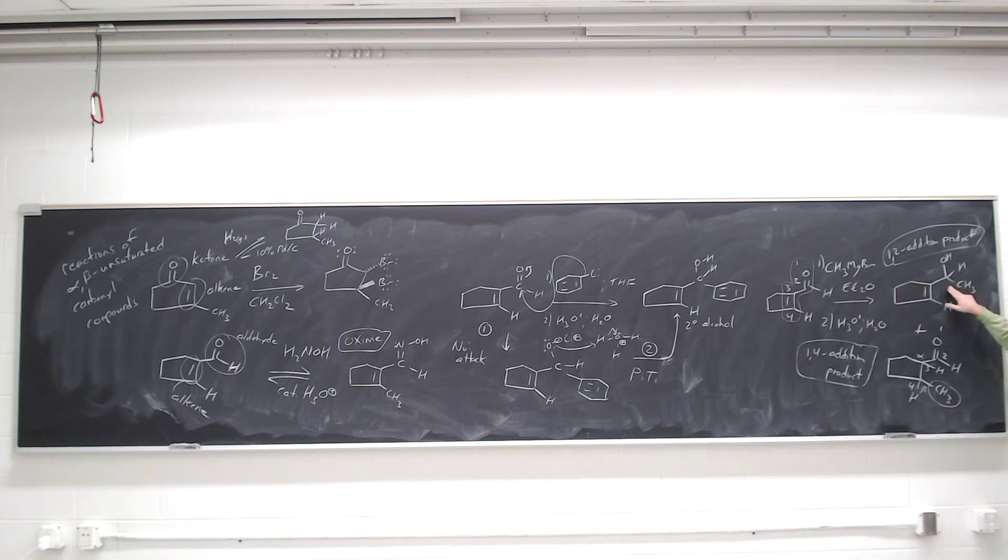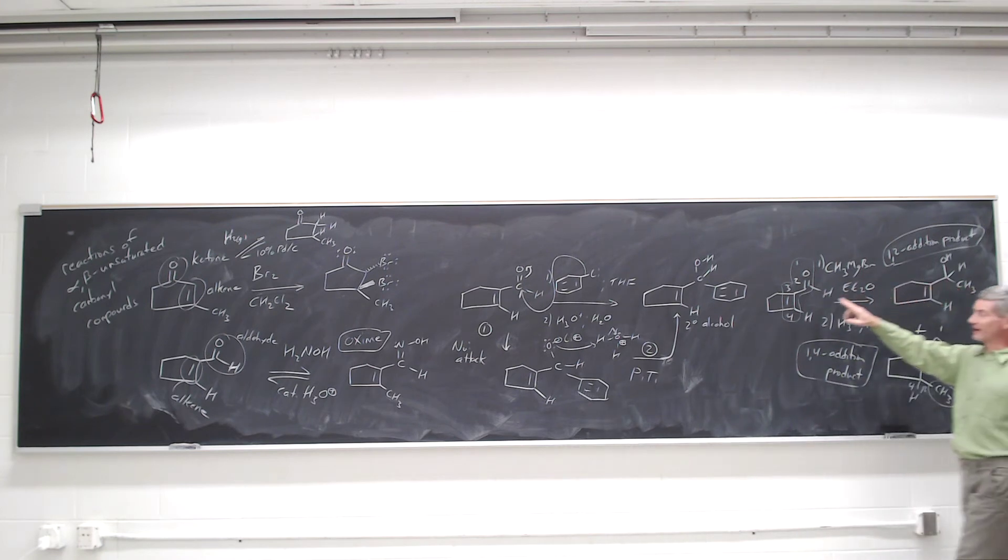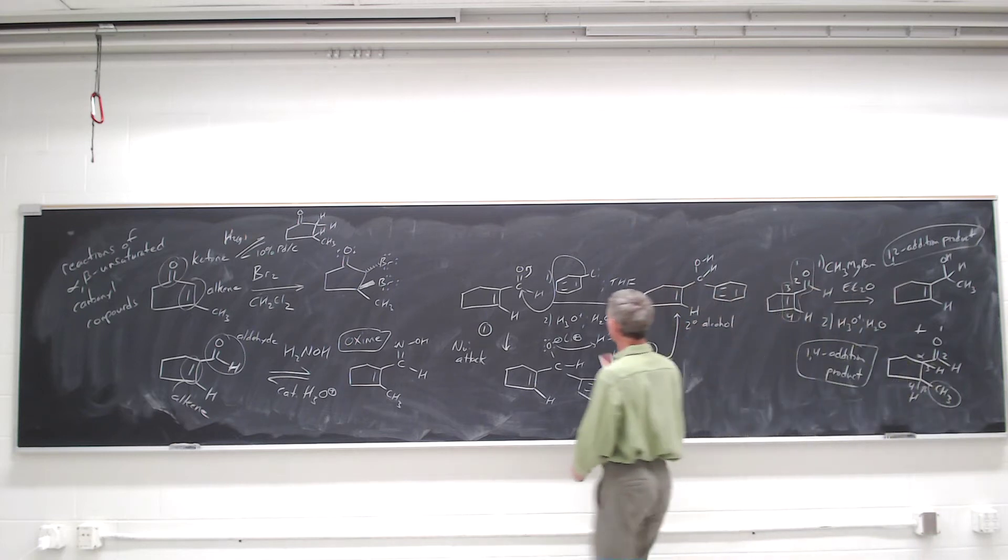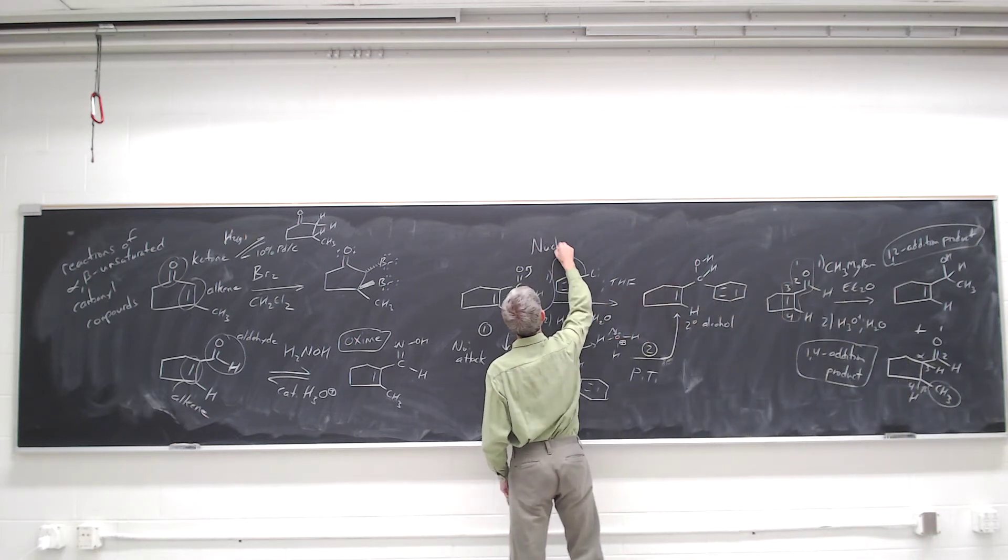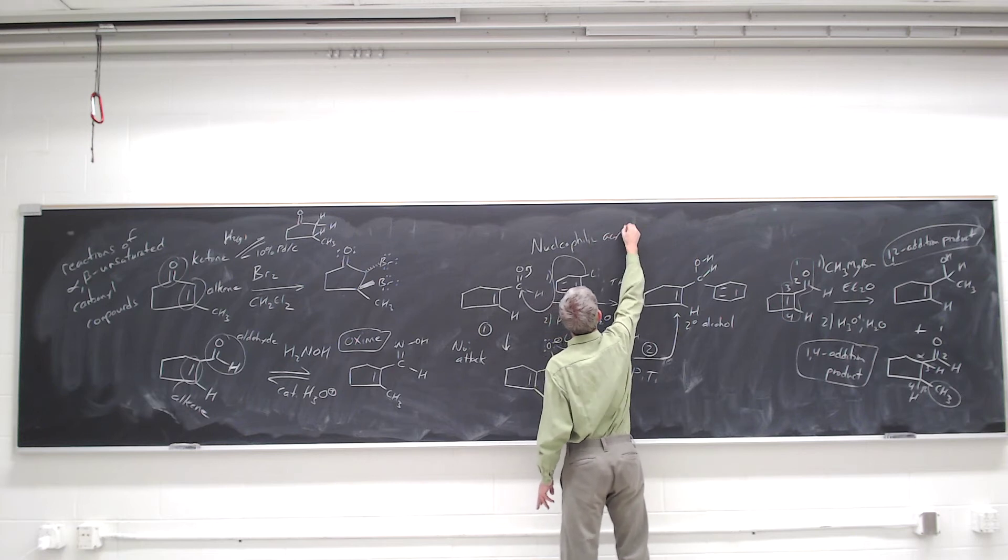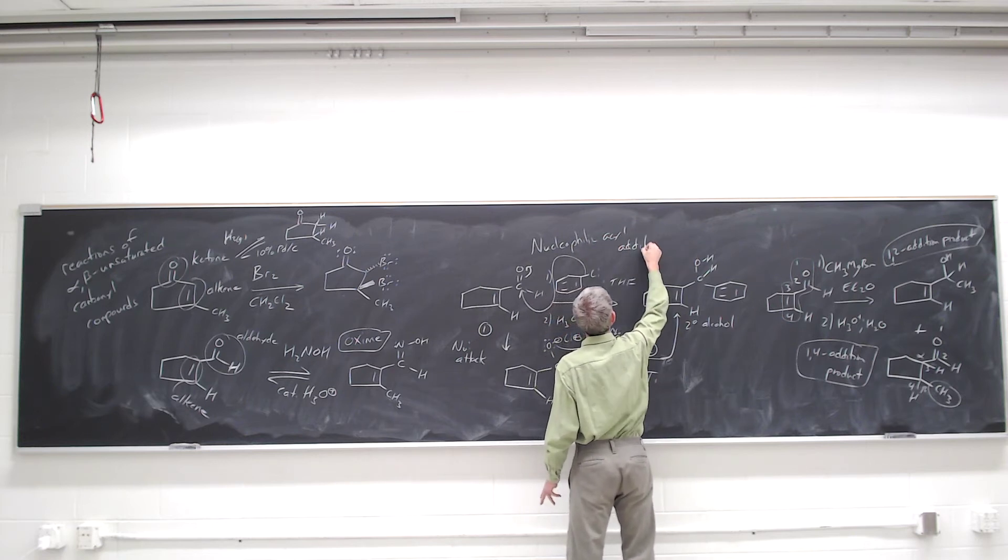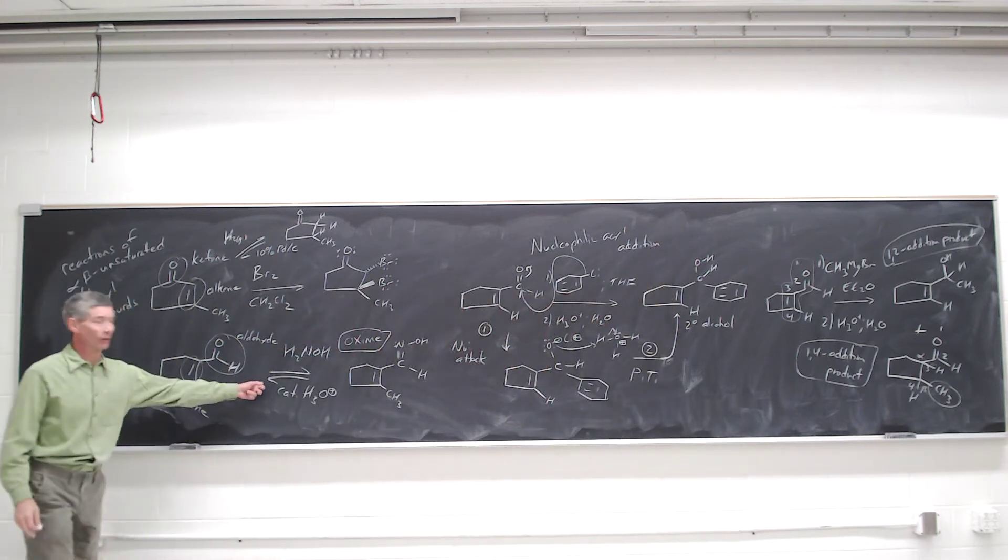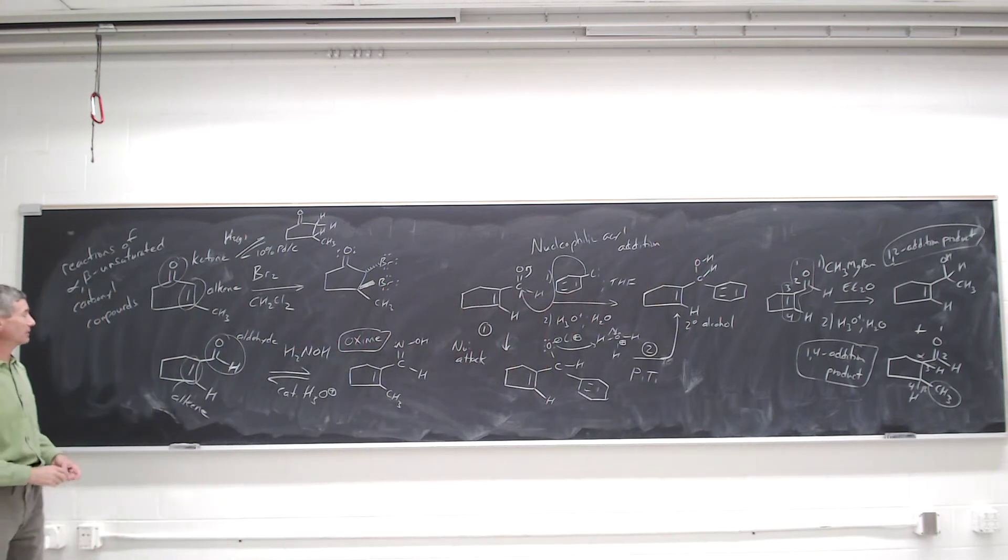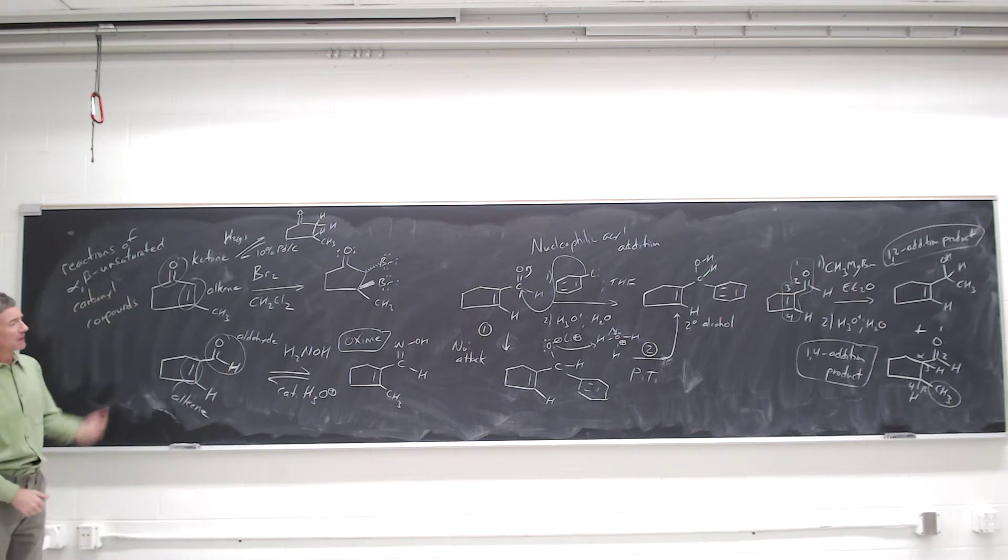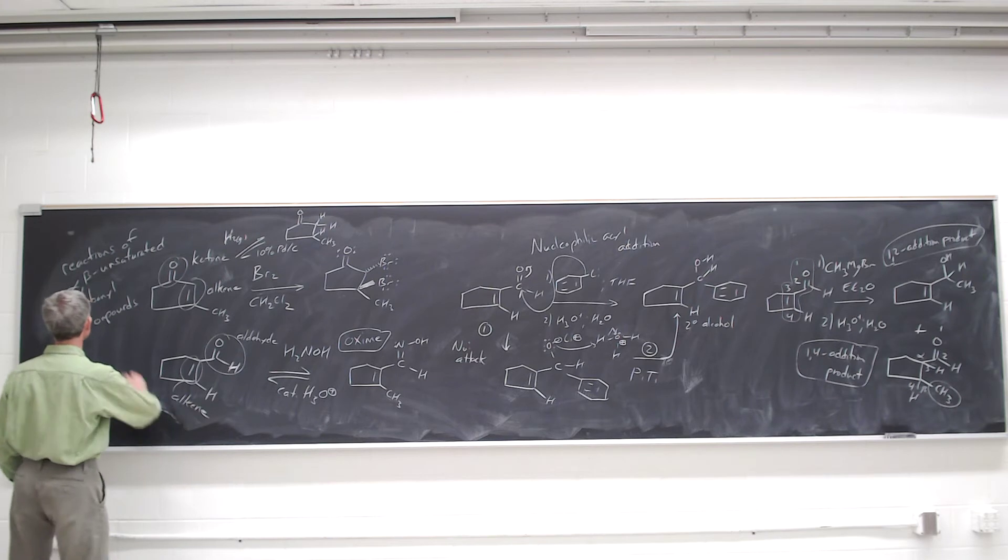It's obvious where this product comes from - it comes from the same nucleophilic acyl addition process that the alkyl lithium uses. The same type of nucleophilic acyl addition performed when we get the oxime from hydroxylamine, or the secondary alcohol. It's less obvious where the one-four addition product comes from.